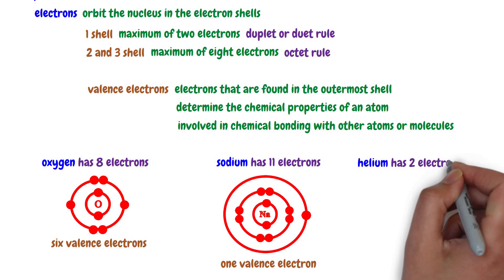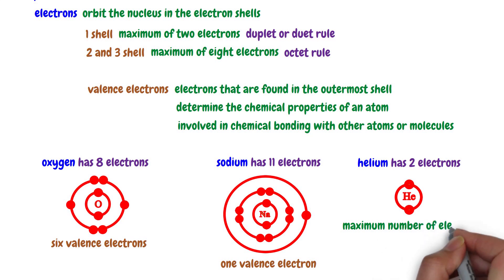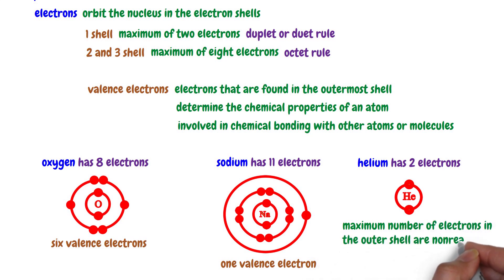Helium has two electrons. As the first shell can contain a maximum of two electrons, helium has a single shell with two electrons in the shell. Any elements that have the maximum number of electrons in the outer shell are non-reactive. They cannot take up or lose any electrons. Therefore, they do not form chemical bonds with other atoms.